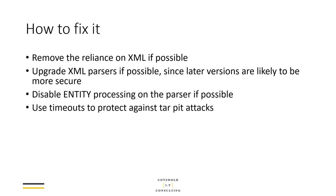If you can't disable entity processing, there are some backstop mitigations. For DOS attacks referencing external endpoints or never-ending files like /dev/random, you could set a timeout on the XML parser — if a tiny document can't be parsed in, say, 200 milliseconds, you know there's a problem and can handle that situation without locking up the request. This may also help with expansion attacks, though it depends on how fast the server is.